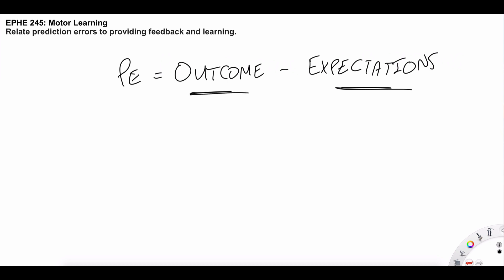So that difference would be a prediction error, and that difference could be used to increase a value. Now what value is being increased? Think back to a previous video about choice.